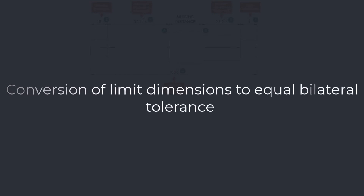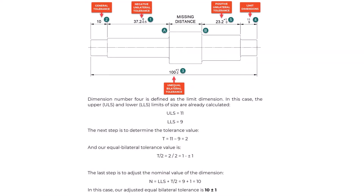Conversion of Limit Dimensions to Equal Bilateral Tolerance. Dimension number four is defined as a limit dimension. In this case, the upper and lower limits of size are already given: ULS = 11, LLS = 9. Tolerance value T = 11 − 9 = 2, so the equal bilateral tolerance is T/2 = 2/2 = ±1. The adjusted nominal value N = LLS + T/2 = 9 + 1 = 10. Our adjusted equal bilateral tolerance is 10 ± 1 millimeter.